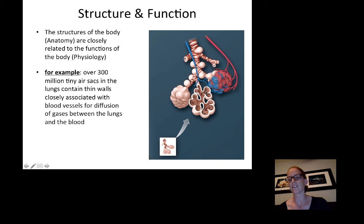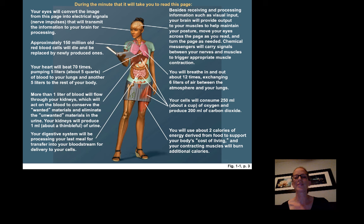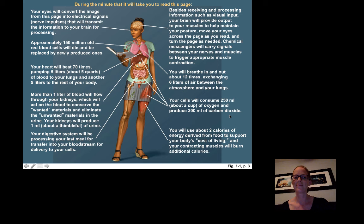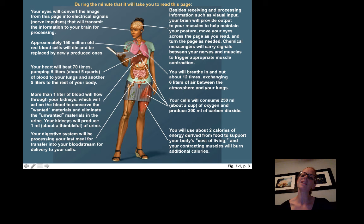The textbook offers a great example: during the minute it takes you to read a page, your cells will consume 250 milliliters of oxygen and produce 200 milliliters of carbon dioxide. More than one liter of blood will flow through your kidneys, which conserve wanted materials and eliminate unwanted materials in the urine — producing about one milliliter of urine per minute. A lot is happening even when you're just sitting passively.